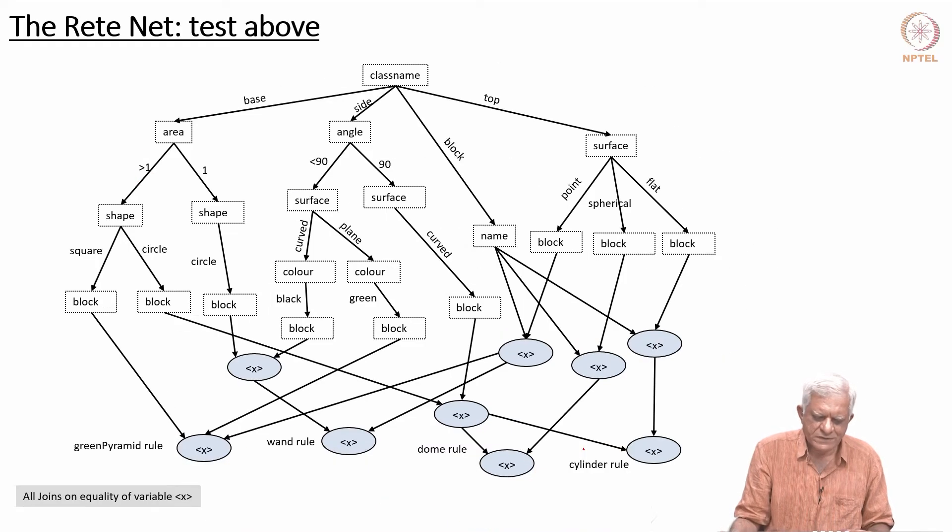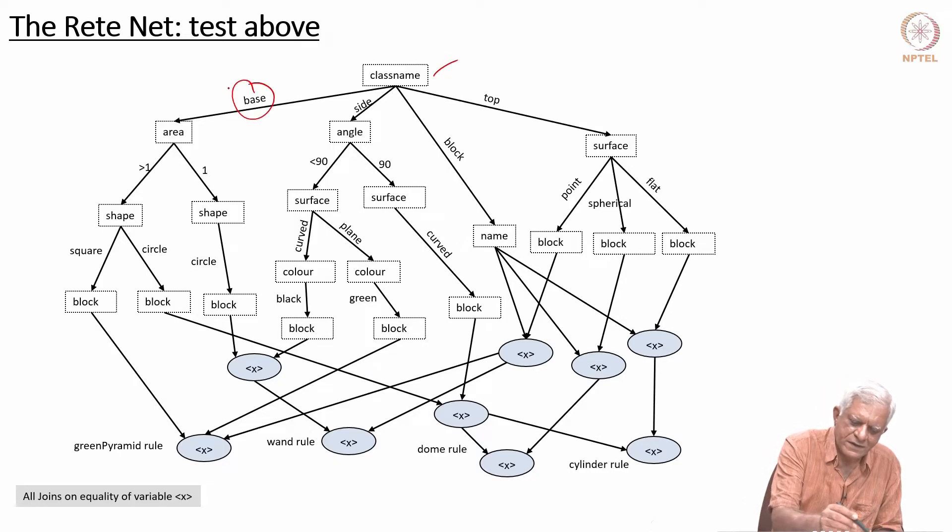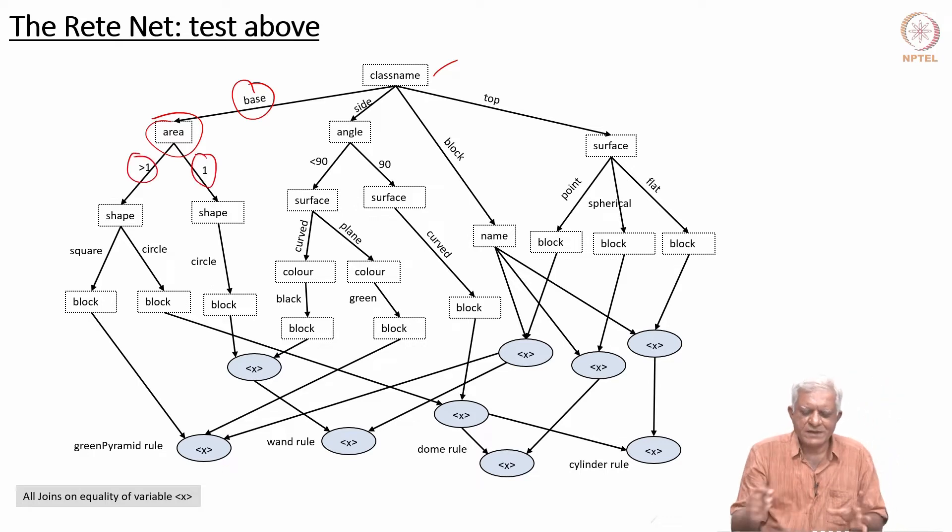If you wanted to use other notation where the test is on the top, then you are saying class—what is the class name? The class name is base. Then you have the next value, which is area. Then it is greater than 1 or equal to 1. You can see the same network, the way of writing it is different. It is a matter of personal choice as to which one you prefer.